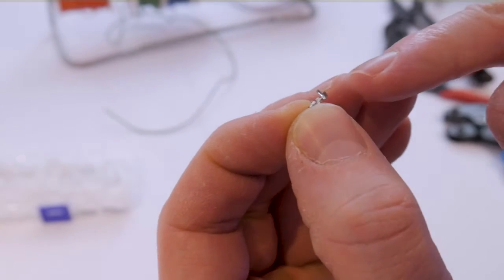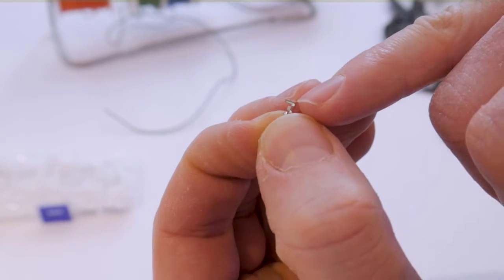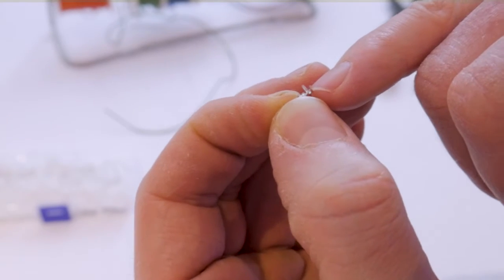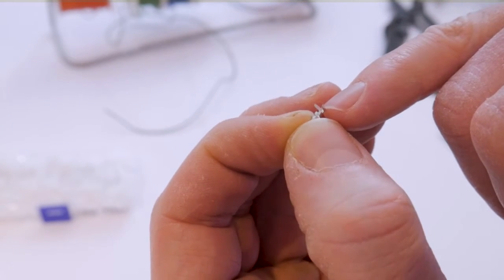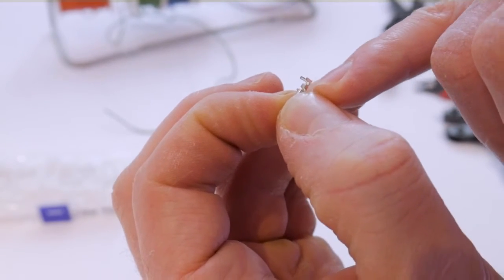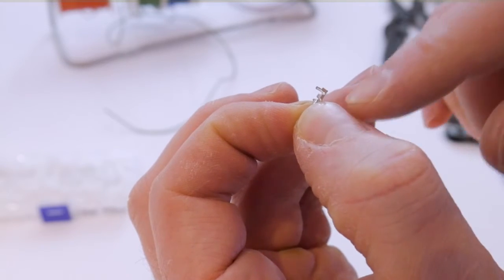Now these terminals have two portions to them. The portion right here on the end with these taller wings, as I like to call them, is supposed to crimp down on the wire insulator, and then there's a shorter section just ahead of it and that is supposed to crimp down onto the bare wire.